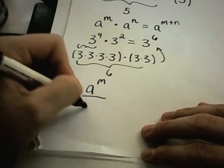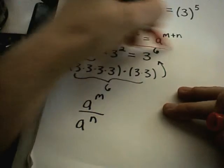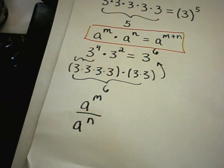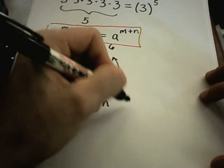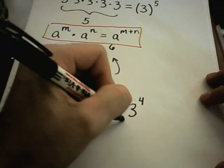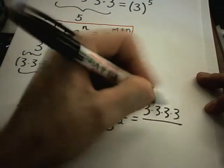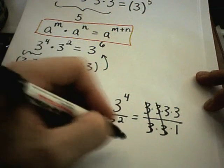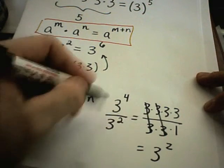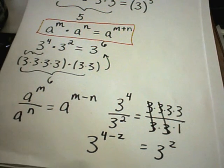Our next basic rule says that if you have a number raised to the m power divided by that same number raised to the n power, you subtract the exponents — taking the top exponent minus the bottom one. For example, 3 to the fourth over 3 squared means three times three times three times three on top, and three times three on the bottom. Canceling two of those leaves 3 squared, which is the same as 4 minus 2. This confirms the rule works.